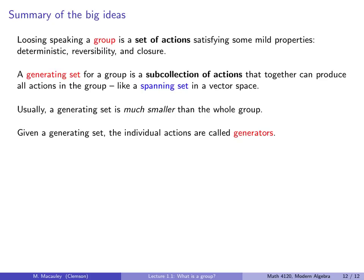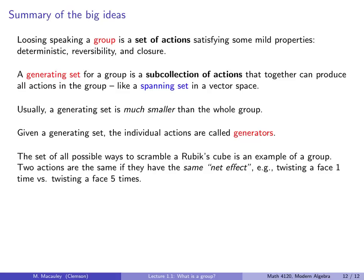So, given a generating set, not surprisingly, the individual actions are called generators. The set of all possible ways to scramble a Rubik's Cube is an example of a group. It's not the simplest group we're going to see, definitely not, but it's nice because it's something that you're probably familiar with. So, two actions are the same if they have the same net effect. For example, twisting a face one time versus twisting a face five times.